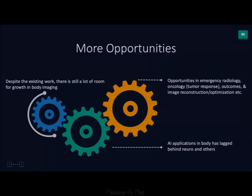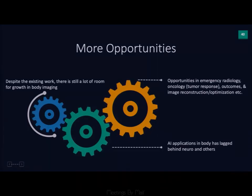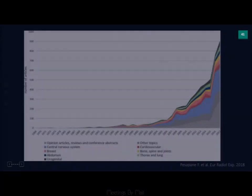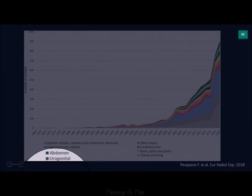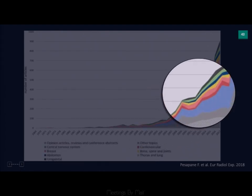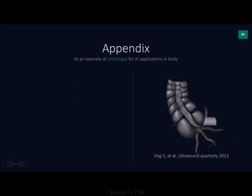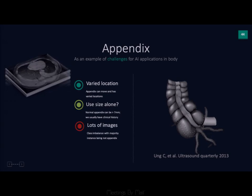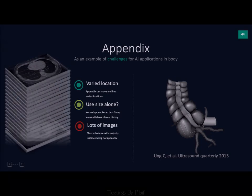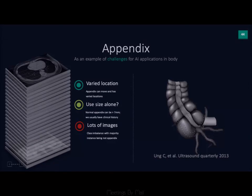Despite all this progress, AI applications in body have lagged behind neuro and other specialties. Publications over the last 10 years show body — represented by GI and GU — with far smaller bars than neuroimaging. Using the appendix as an example of these challenges: it has a varied location, we can't use size alone, normal appendices can be 7mm or more, and there's class imbalance with the majority of images not being appendix, let alone appendicitis. Patients may also have widespread metastatic disease or primary appendiceal tumors.